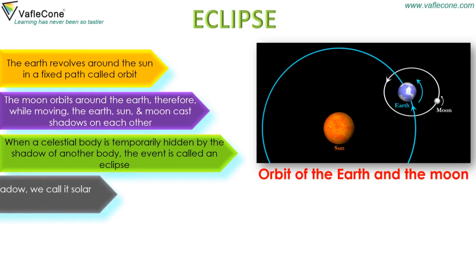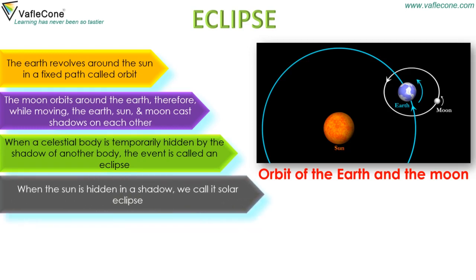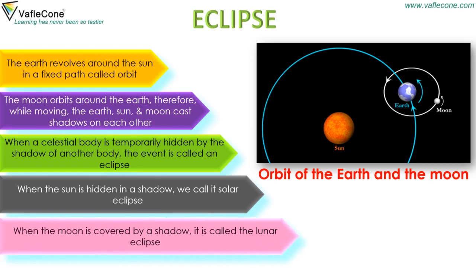When the sun is hidden in a shadow, we call it a solar eclipse. When the moon is covered by a shadow, it is called the lunar eclipse.